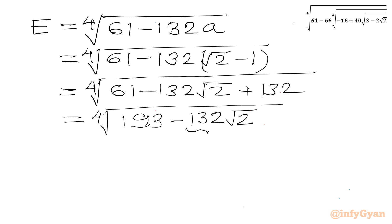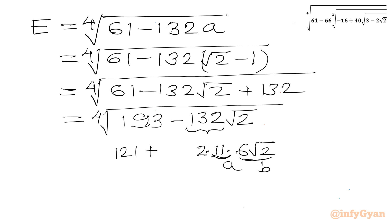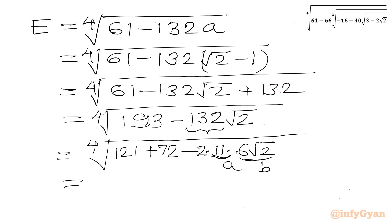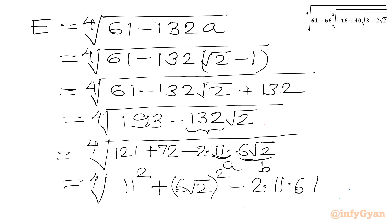Now I find factors of 132 = 2 × 11 × 6. With the √2 present, I set A = 11 and B = 6√2, so A² = 121 and B² = 72, giving 121 + 72 = 193, and 2AB = 132√2. Therefore 193 − 132√2 = (11 − 6√2)², and E = 4th root of (11 − 6√2)².